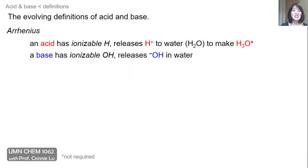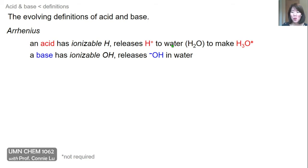Historically, the definitions of acids and bases have evolved. The first important definitions were proposed by Arrhenius. He proposed that an acid has an ionizable H atom — meaning it can be released as a proton, H+, to water — and the proton and water form H3O+, called the hydronium ion. A base, on the other hand, has an ionizable OH group, meaning it can release OH minus, or hydroxide, in water.